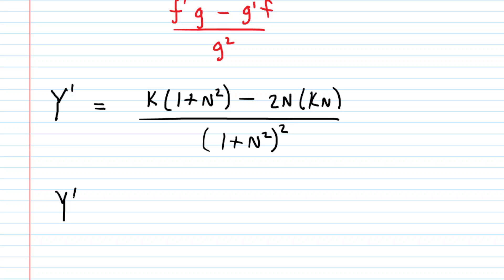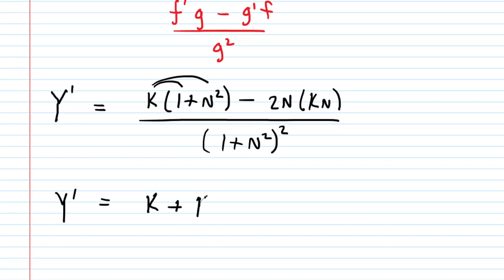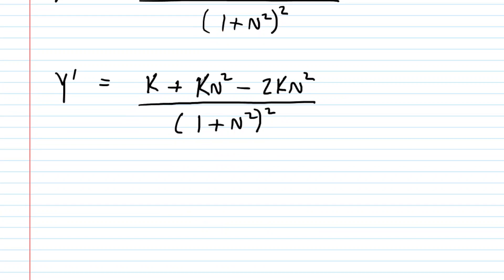Now we want to simplify. In the numerator, we could distribute this k. So k times 1 is k, k times N squared is kN squared. Over here, we have 2N times kN. That's going to be 2kN squared. We can see we have some like terms. We have 1kN squared minus 2kN squared. That would be minus 1kN squared altogether.